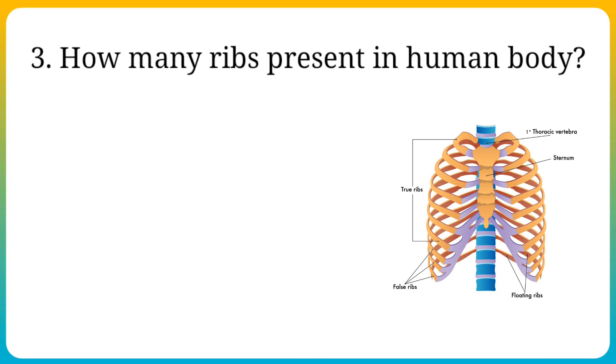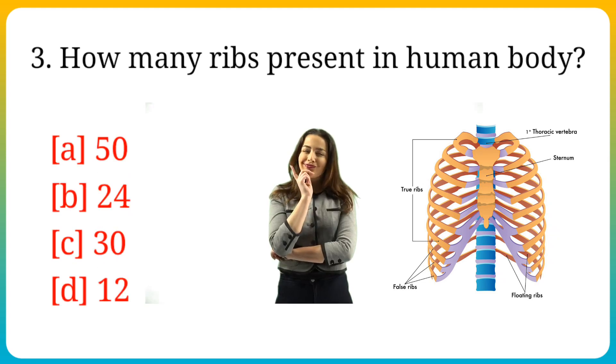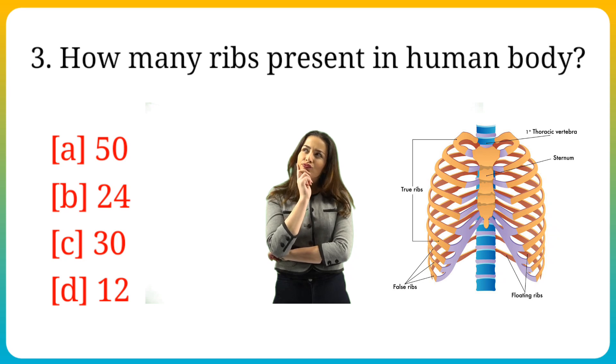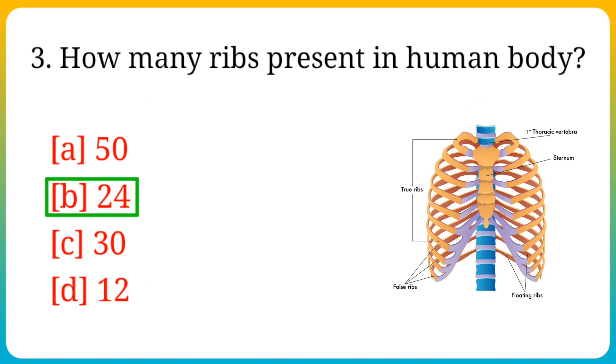Question number 3. How many ribs present in human body? Options are: A. 50, B. 24, C. 30, D. 12. Answer is option B. 24.